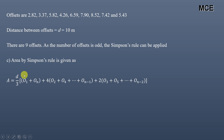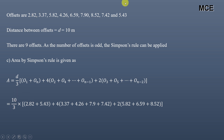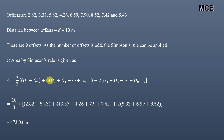Area by Simpson's rule is given as: (d / 3) × [first + last offset + 4 × (sum of even-positioned offsets) + 2 × (sum of odd-positioned offsets)]. So: (10 / 3) × [(2.82 + 5.43) + 4 × (3.37 + 4.26 + 7.90 + 7.42) + 2 × (5.82 + 6.59 + 8.52)] = 473.03 square meters.